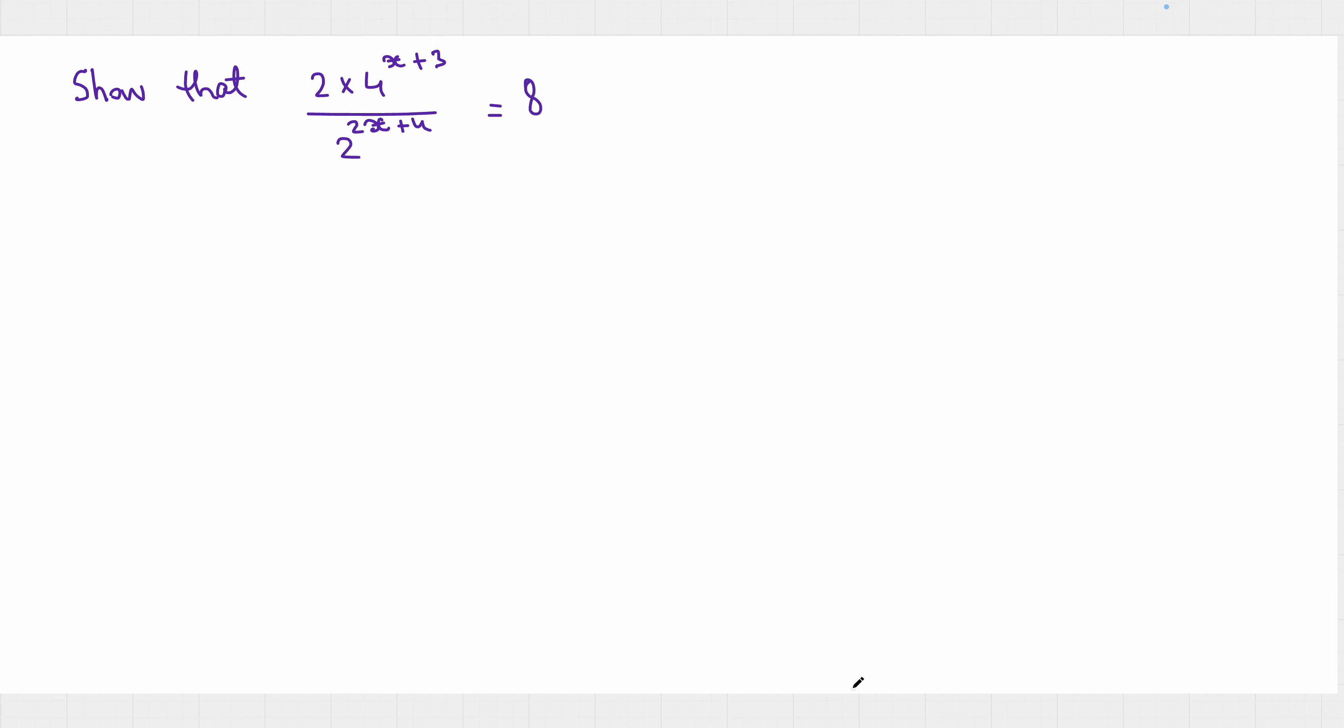Hello again! Show that 2 times 4 to the power x plus 3 over 2 to the power 2x plus 4 equals 8. Give it a try and we will see together one way of solving this.